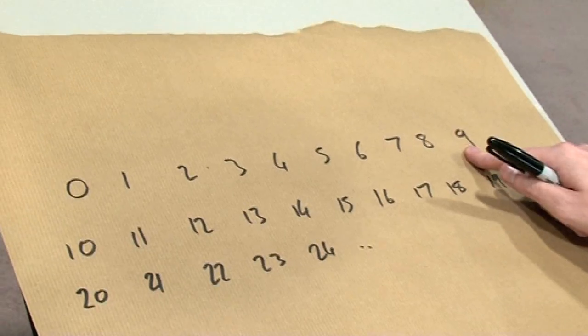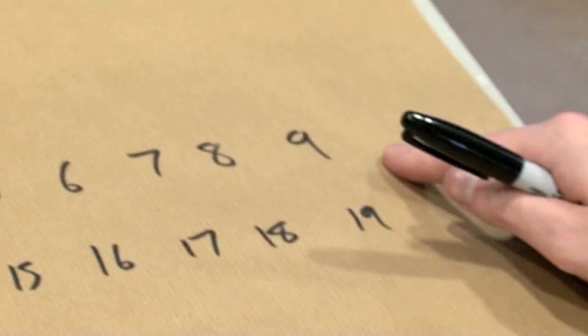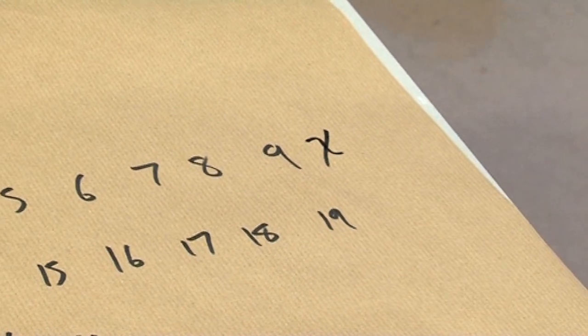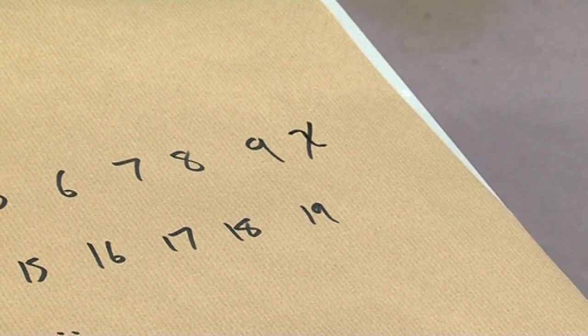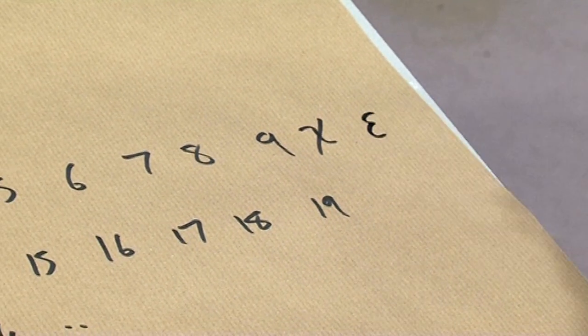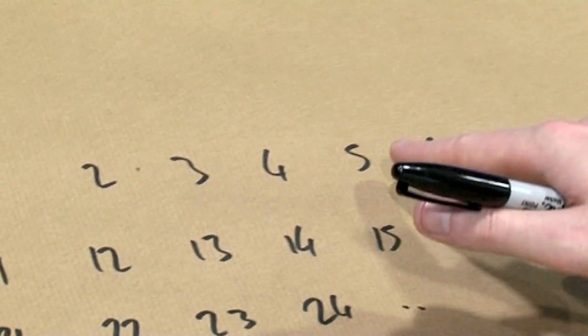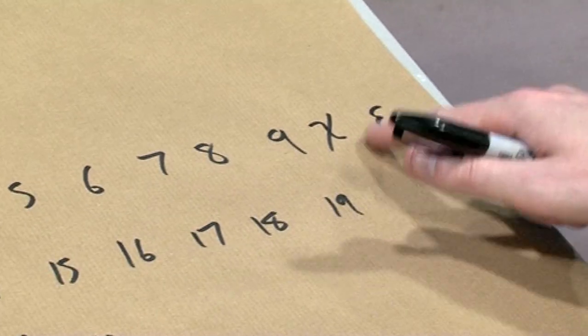So first of all, if we're going to use 12 symbols, I need two extra. Let's have a look at what they suggest. For 10, we're going to have a symbol like this. That's called deck. And for 11, we're going to have a symbol like this, which is called L. So now it reads 0, 1, 2, 3, 4, 5, 6, 7, 8, 9, deck, L.